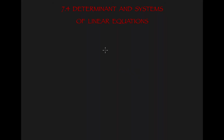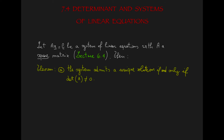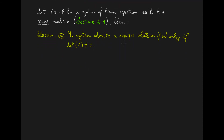We are now going to see what is the relationship between the determinant and systems of linear equations. Let's assume that Ax equals B is a system of linear equations with A a square matrix, meaning this system has the same number of unknowns as the number of equations. The first part of the theorem states that this system admits a unique solution if and only if the determinant of A is non-zero.